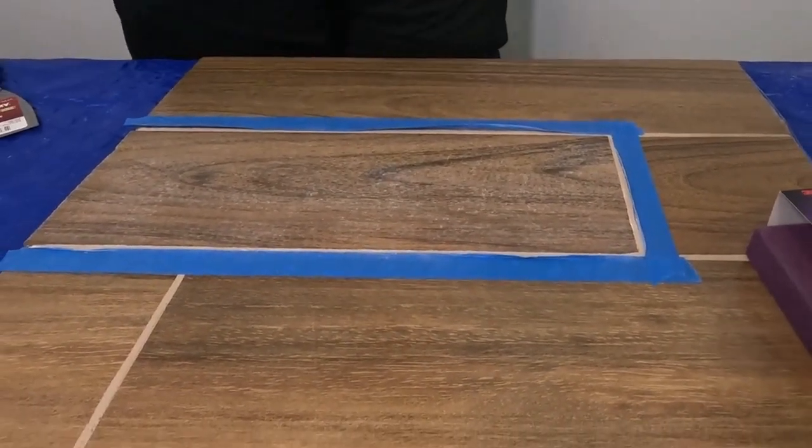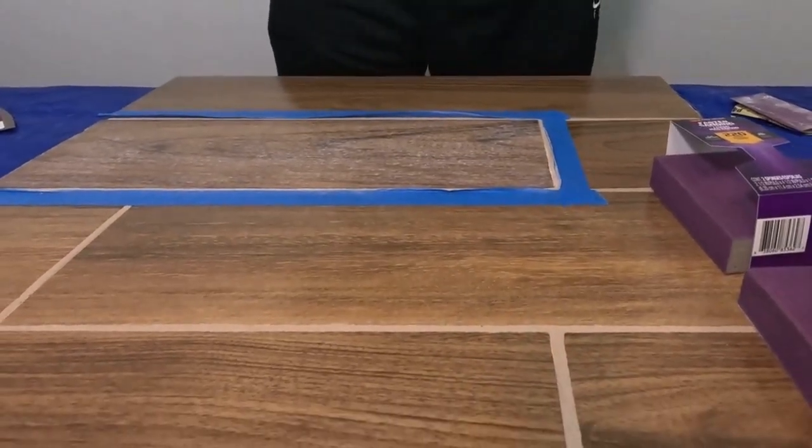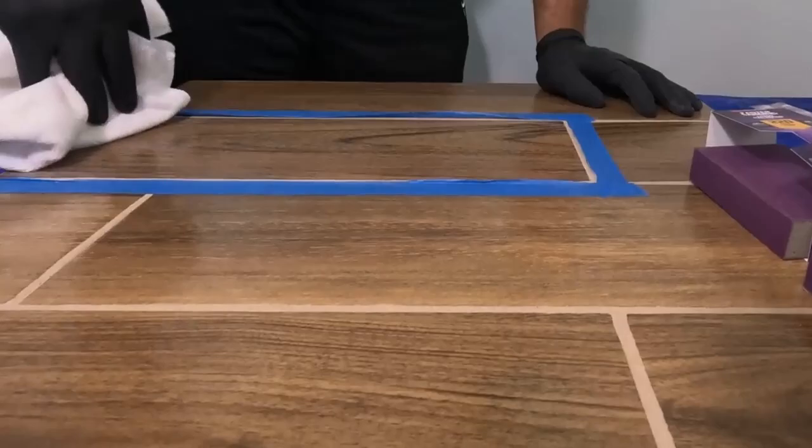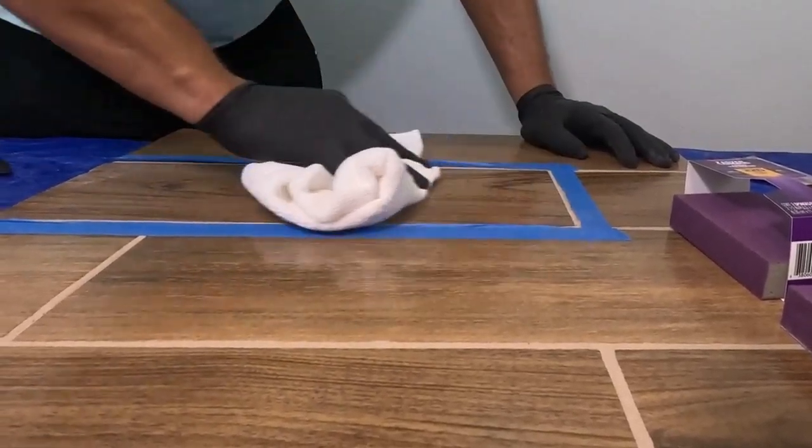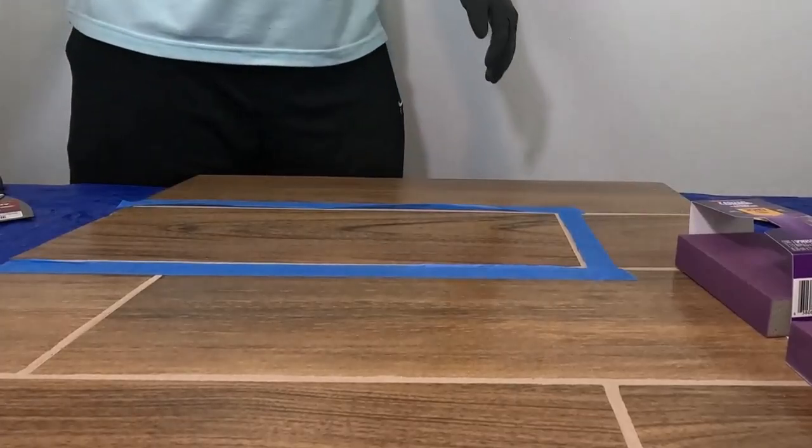You can use a damp cloth slightly damp with water, or rubbing alcohol which dries and flashes off quickly. The main thing is not to leave that surface with a lot of moisture on it.